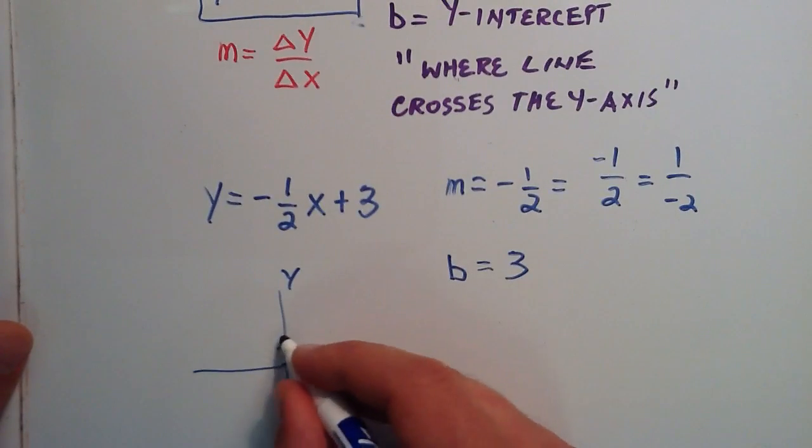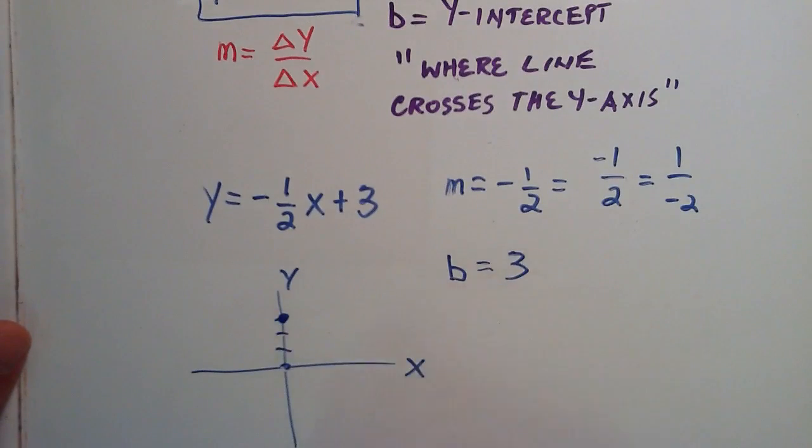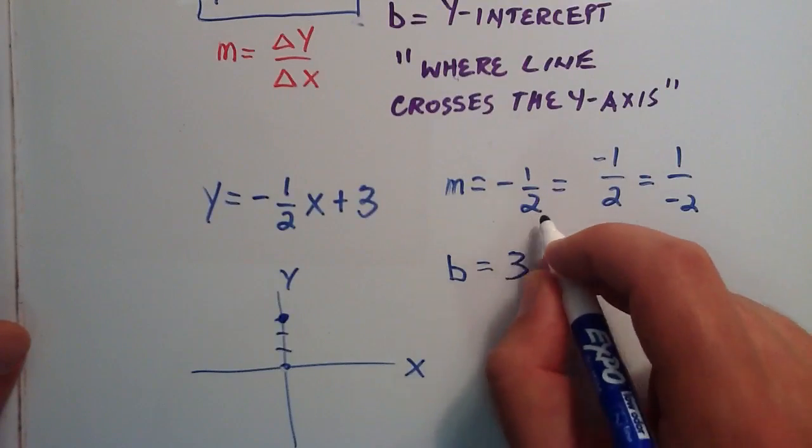We go up one, two, three, right there. So the line will cross right here, where y equals three. And then, for the slope, we can use either one of these to determine the next point on the line.